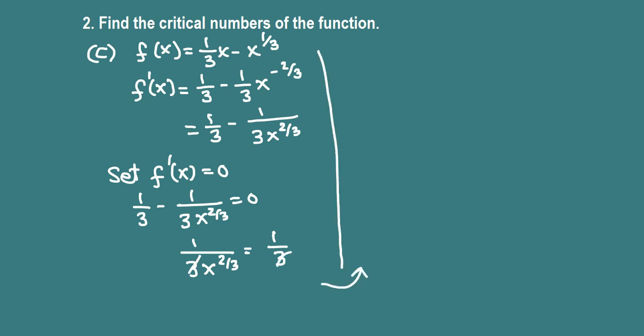We get x raised to 2/3 equals 1. It's a cubic root, so cube both sides. We get x to the 2/3 cubed equals 1 cubed. The 3s cancel, so x squared equals 1 cubed, which is 1. Take the square root of both sides, so x equals plus or minus 1. These are the critical numbers.